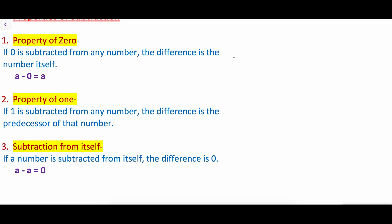For example, 24 minus 0 is equal to 24. So if 0 is subtracted from any number, the difference is the number itself. The second property is the property of 1: if 1 is subtracted from any number, the difference is the predecessor of that number.